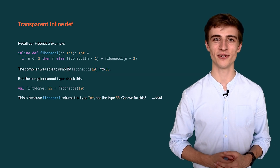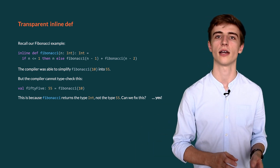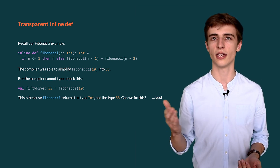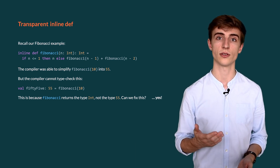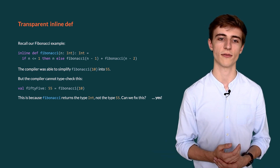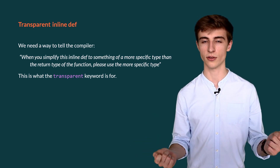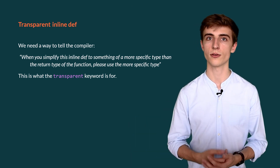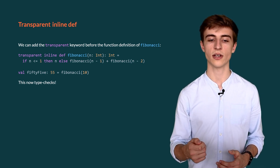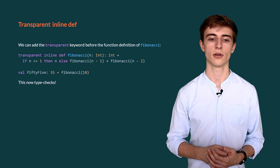Another advanced inlining trick is transparent inline defs. In our Fibonacci example the compiler was able to simplify Fibonacci of 10 into 55, but the compiler cannot type check this as type 55 even though it knows that Fibonacci of 10 is 55 — because the Fibonacci function returns an Int, not the type 55. Can we fix this? Yes, with a transparent inline def. We need a way to tell the compiler: when you simplify this inline def to something that is a more specific type than the return type of the function, please use the more specific type. If we add the transparent keyword before the function definition of Fibonacci, we can now type check Fibonacci of 10 as the literal type 55.